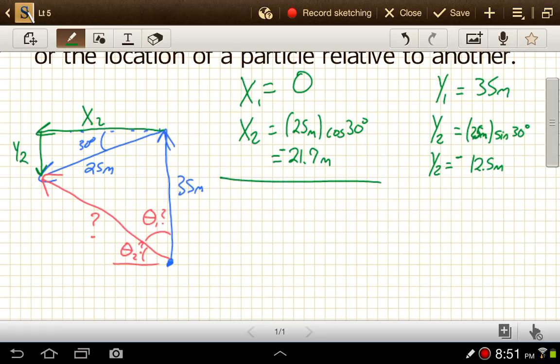So overall, in the x direction, sometimes we write this as rx, the x part of the resultant vector. We have 0 plus negative 21.7 meters, so just negative 21.7. And then ry, we have 35 plus a negative 12.5, so that's going to be a positive 22.5 meters.